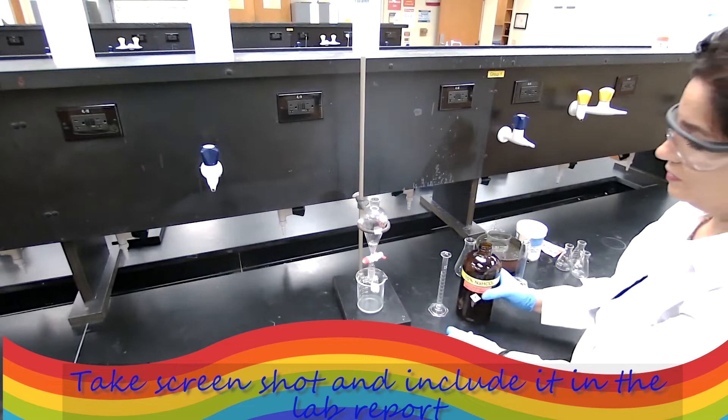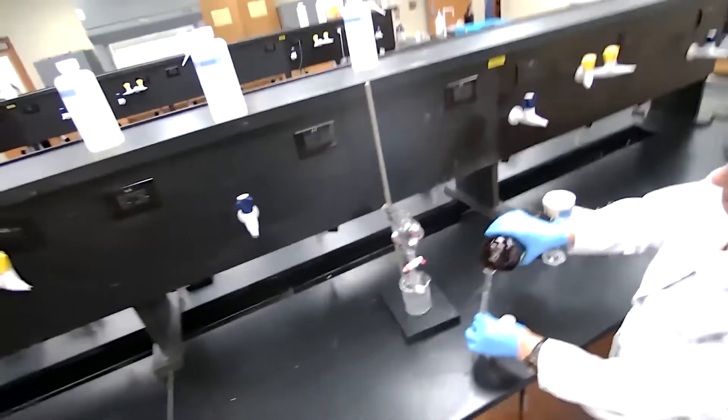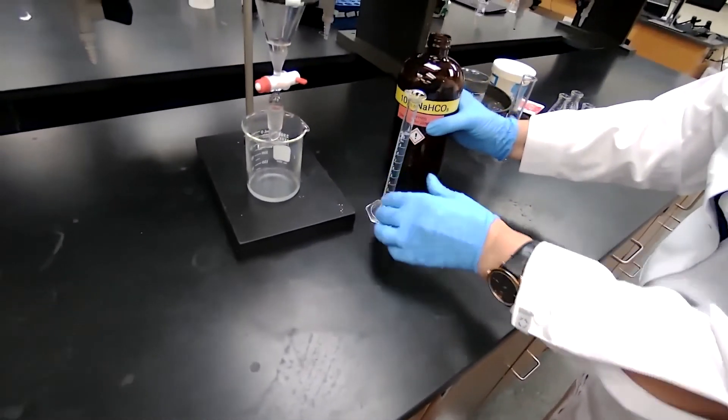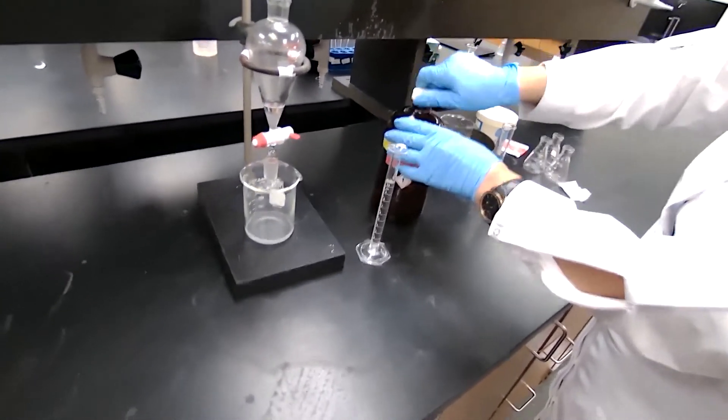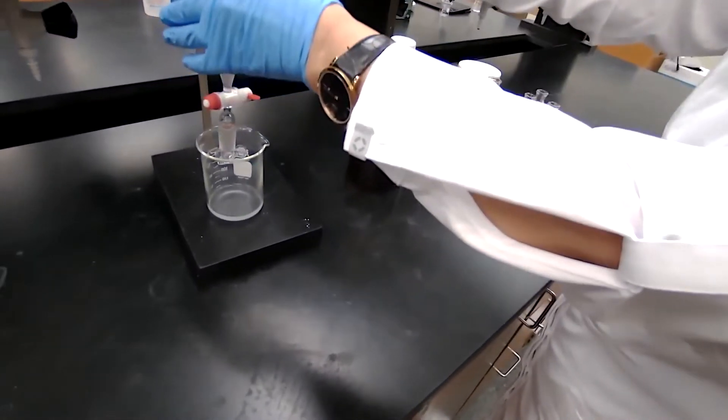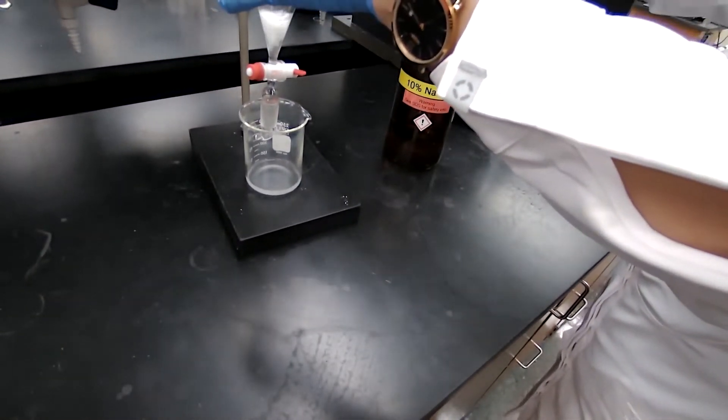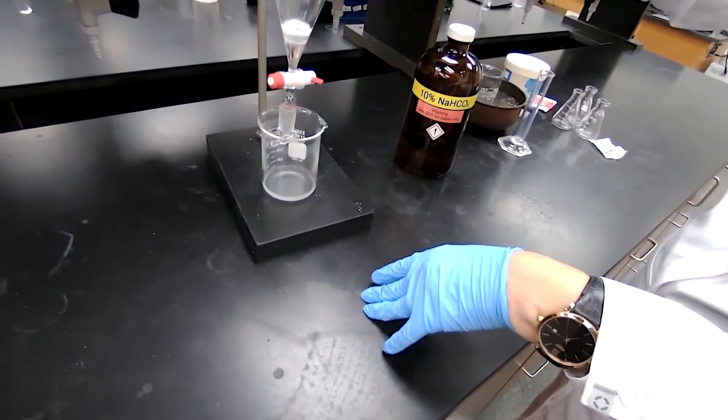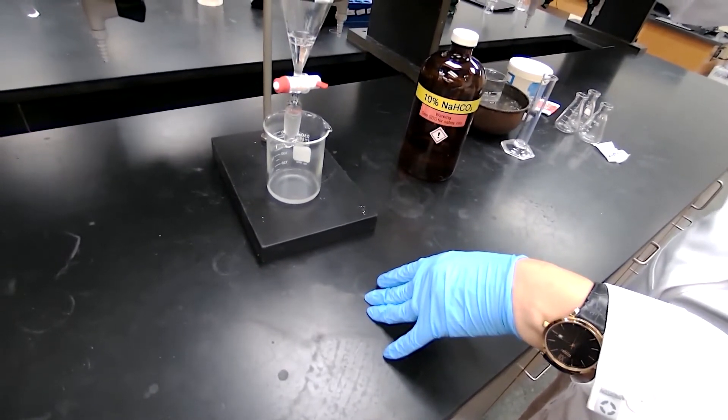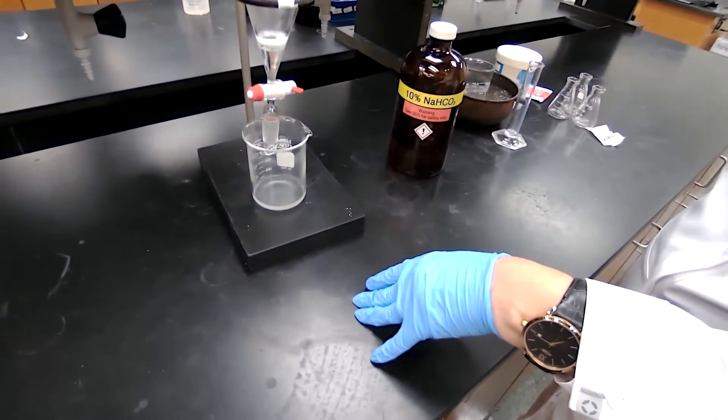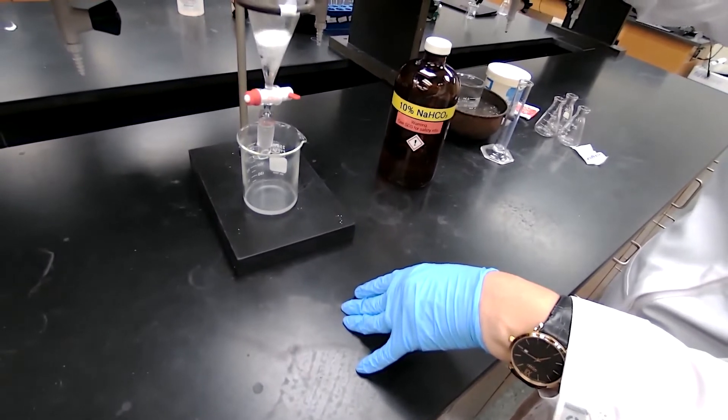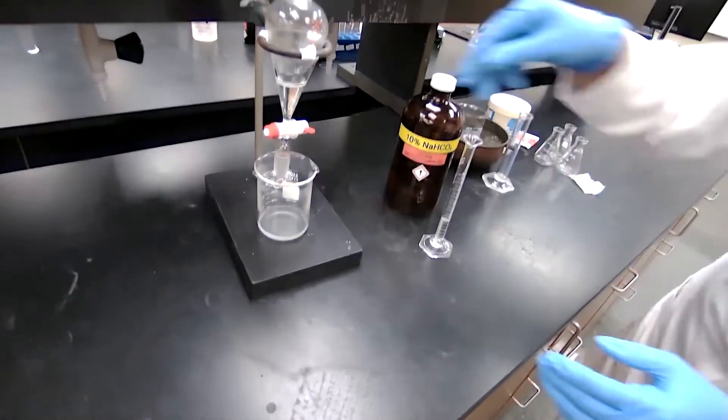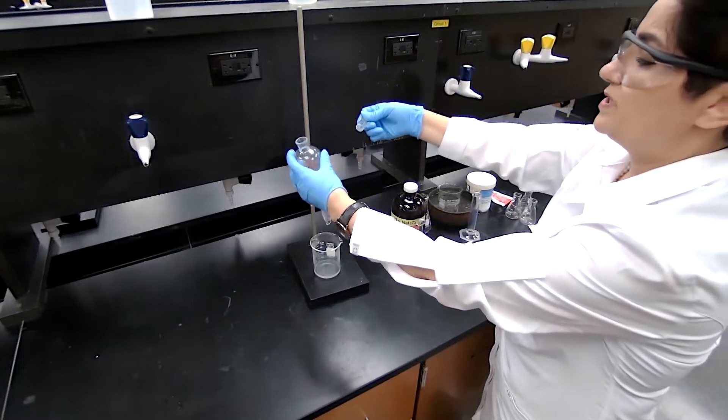The next step we are going to wash this with sodium bicarbonate. The reason we are washing with sodium bicarbonate is because if there is any leftover of the acid, it would be removed. So I am just going to measure 10 milliliters of sodium bicarbonate, carefully add to the separatory funnel. It does produce carbon dioxide gas, so I am adding slowly because it is an acid-base reaction.